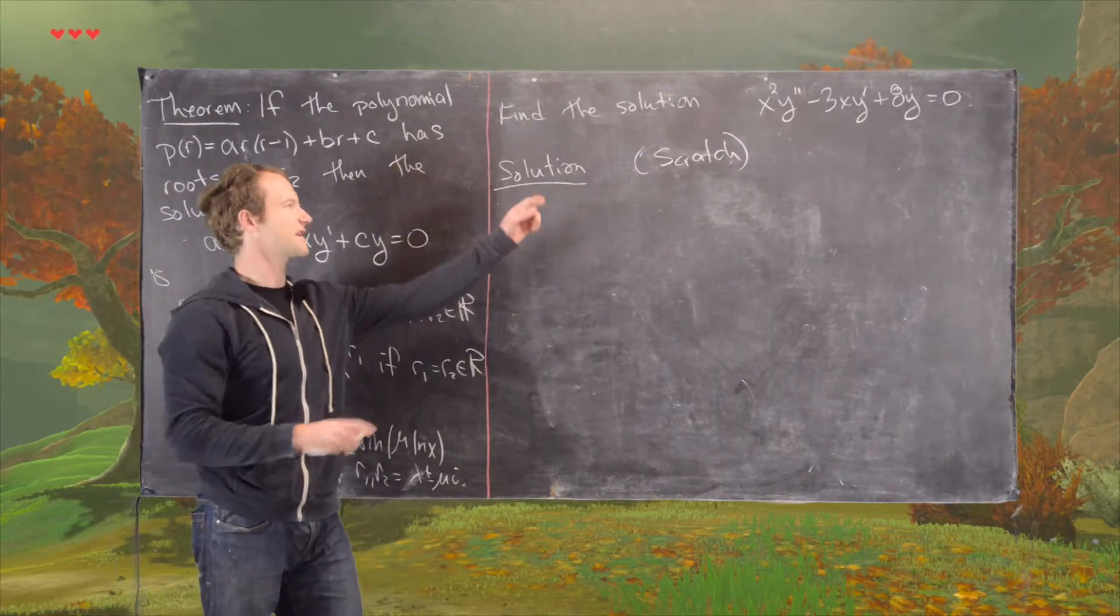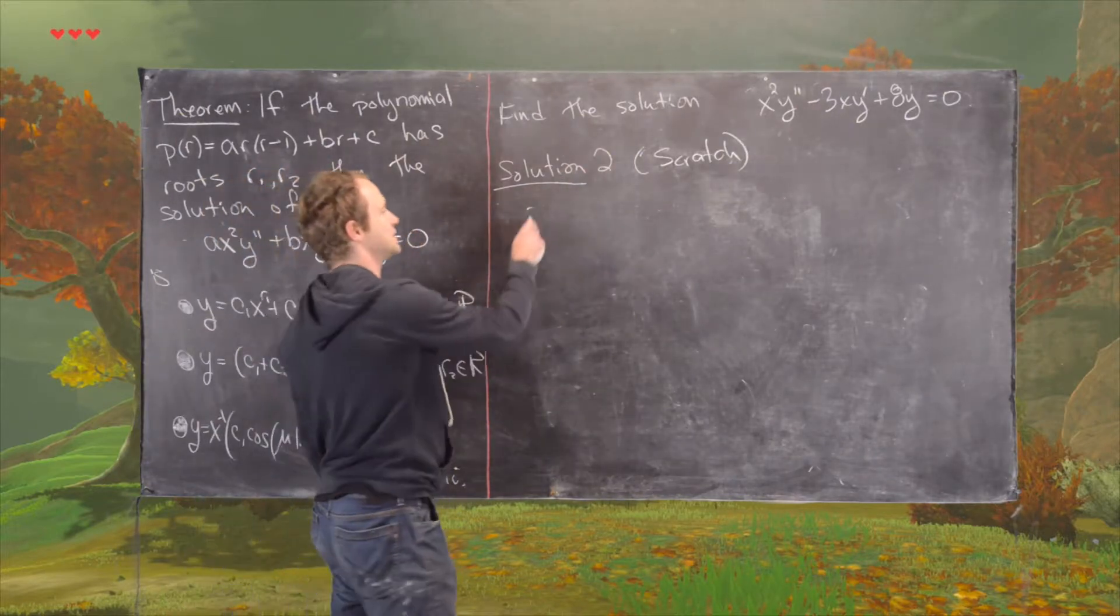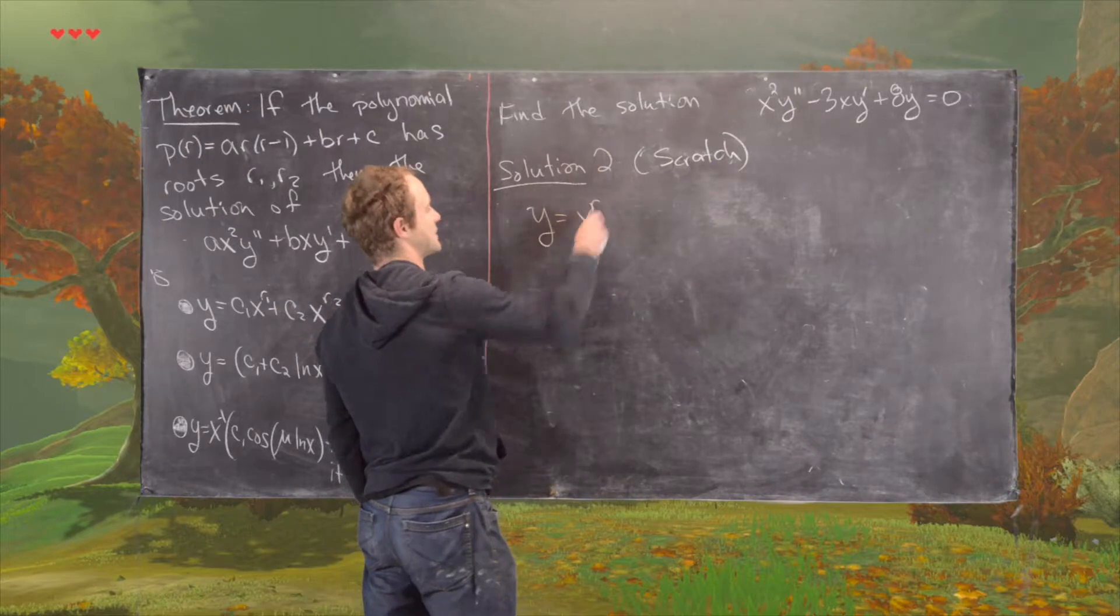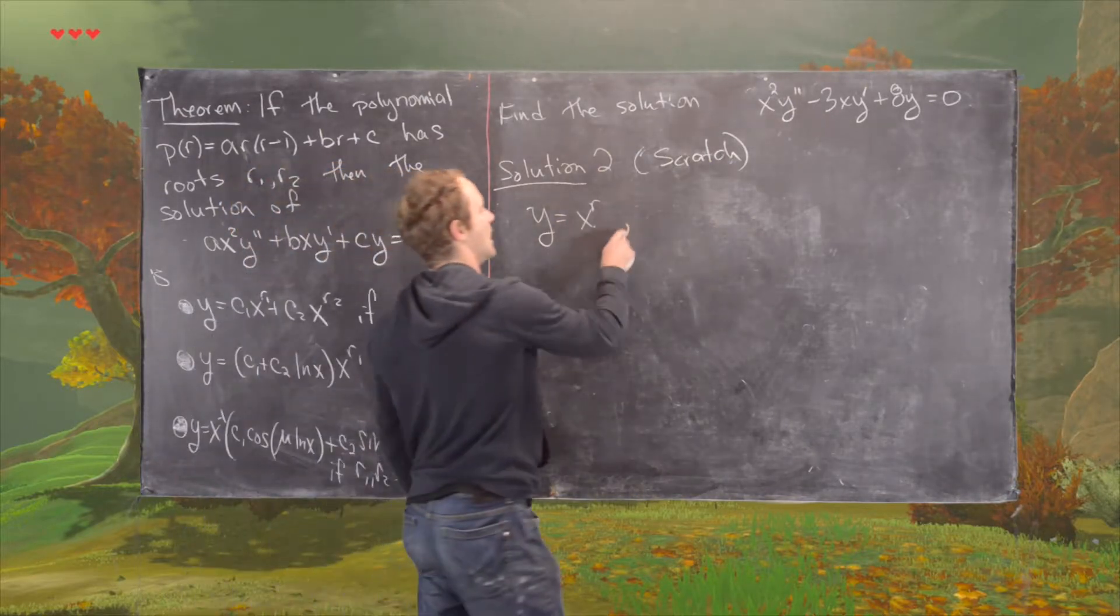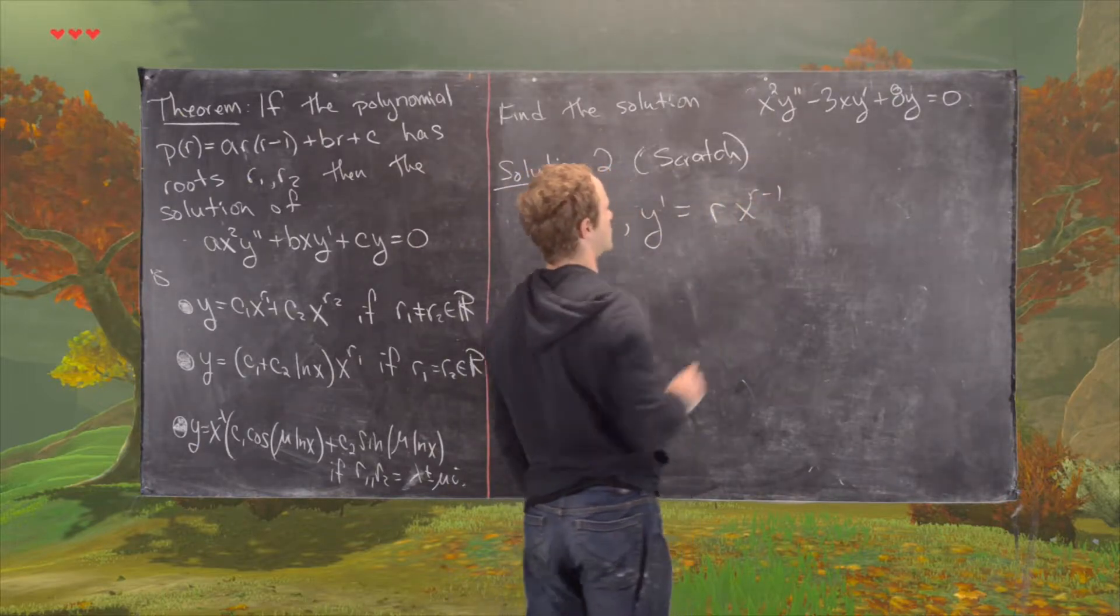We're ready for our second solution, building the solution from scratch. We'll guess that we have a solution of the form x to the r, which means we can populate our derivatives using the power rule.